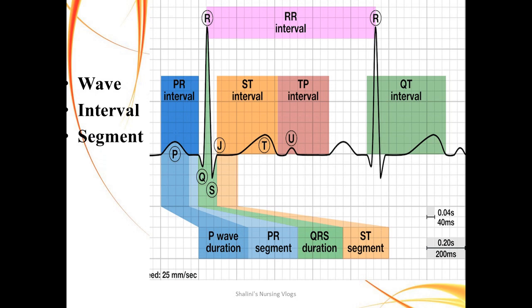The next term is segment. A segment is a baseline section without any deflection. The PR segment is a baseline without any deflection and without any electrical activity. Similarly, the ST segment also does not have any electrical activity included in it.